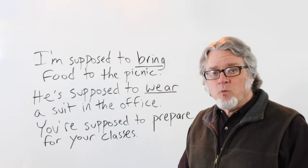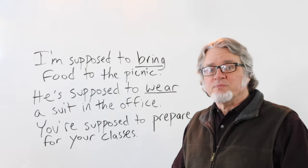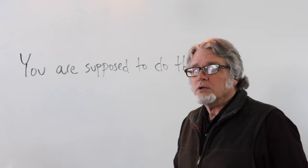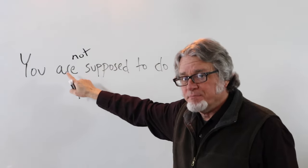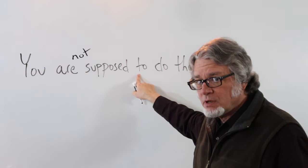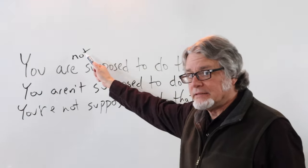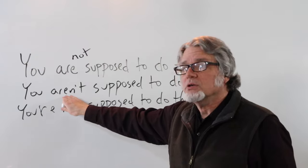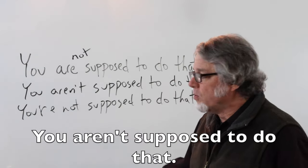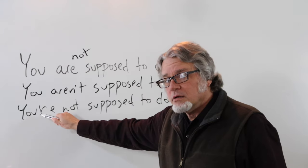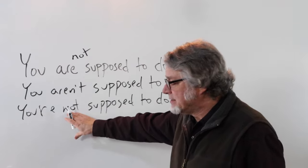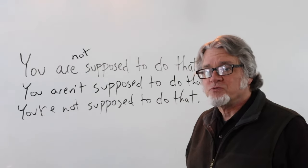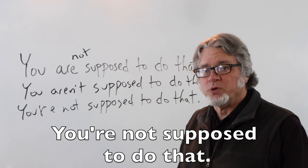To make the negative, put 'not' between the verb 'be' and 'supposed to.' For example: 'You are not' becomes 'you aren't supposed to do that,' or 'you're not supposed to do that.' Using 'not' this way makes the statement stronger.